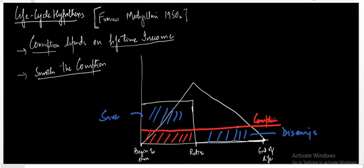This is the Life Cycle Hypothesis: if an individual lives for more than two periods, he is going to smoothen his consumption, and that consumption depends upon the income he earns over his lifetime. In the initial periods he saves a portion of income and does not consume more. He then uses those savings after his income stream falls, so as to smoothen consumption throughout his life.